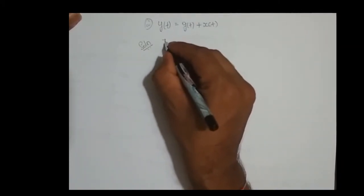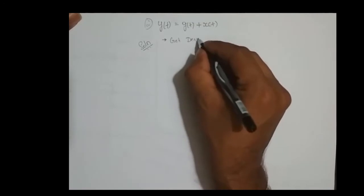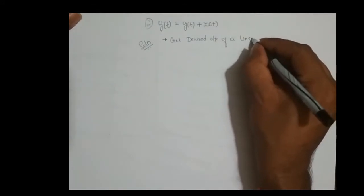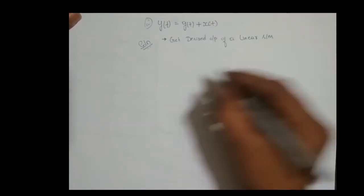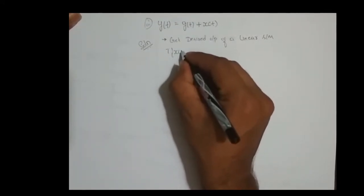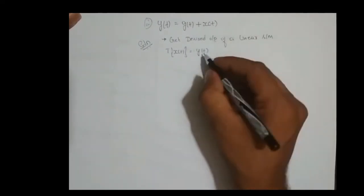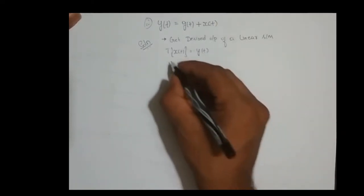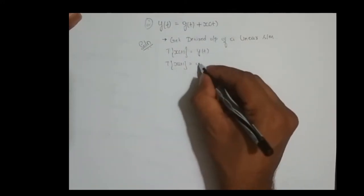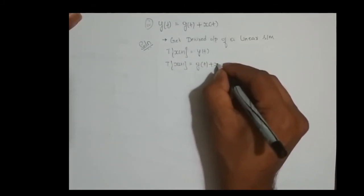What is the first thing I need to do? I need to get the desired output of a linear system. As per the linearity property, transformation of x of t is equal to y of t. This is the standard form we use to represent the system input-output. So, transformation of x of t equals y of t, and what is y of t? y of t is g of t plus x of t.